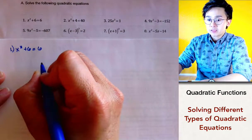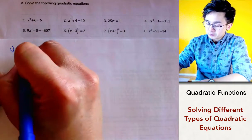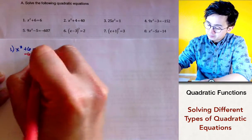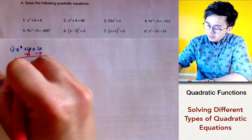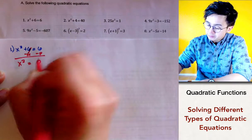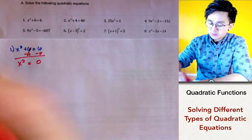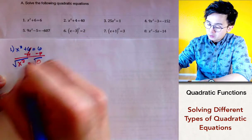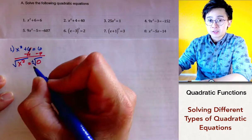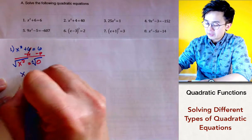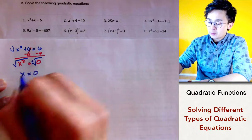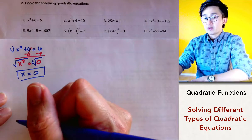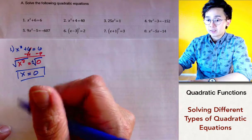To solve this quadratic equation, we simply subtract 6 on both sides, giving us x squared equal to 0. To get x by itself, we take the square root of both sides, and we always include the plus or minus symbol. So x is equal to 0, and since 0 is neither positive nor negative, 0 is our only solution.